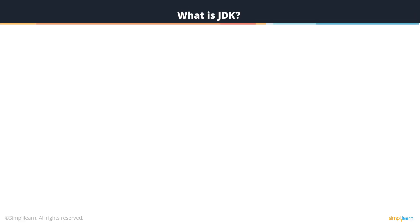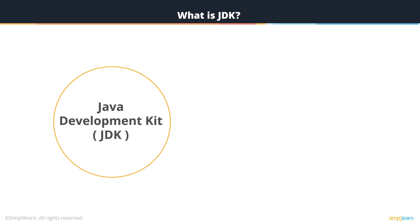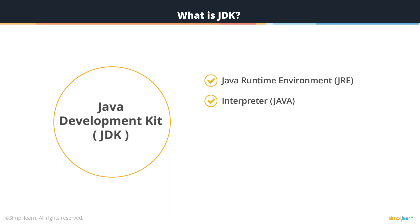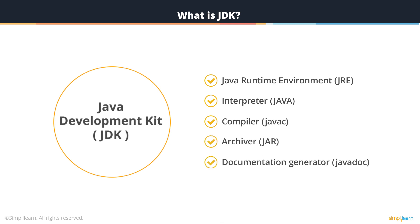Let's look into what Java Development Kit means. All Java applications and applets are developed using the Java Development Kit, that is JDK. The JDK consists of the Java Runtime Environment, an interpreter, a compiler, an archiver, a document generator, and a few more tools that go into developing a Java program.